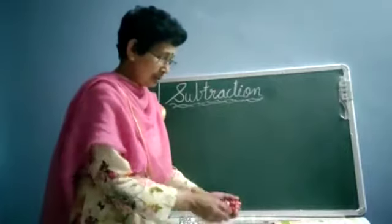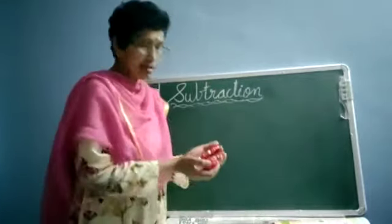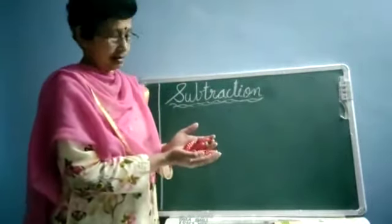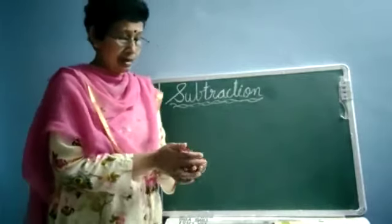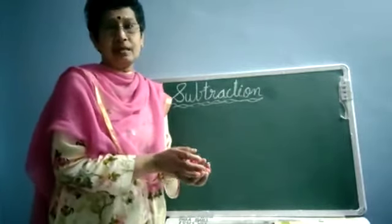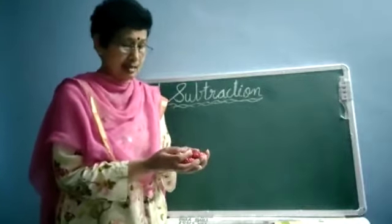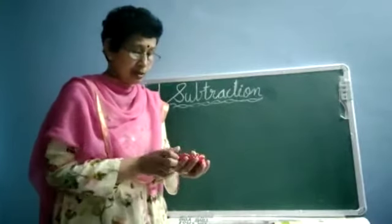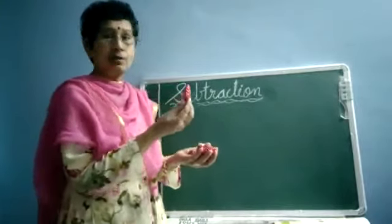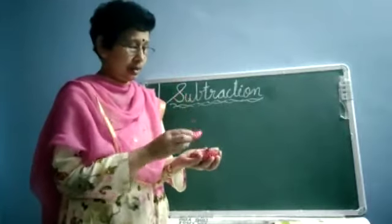So I will show you some examples. I have some decoration pieces in my hand. Here I have 6 pieces. How many are there? 6 are there. One more thing, you notice this decoration piece is in the shape of a cone.